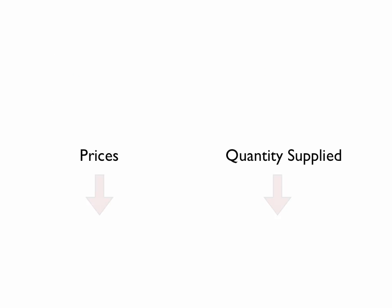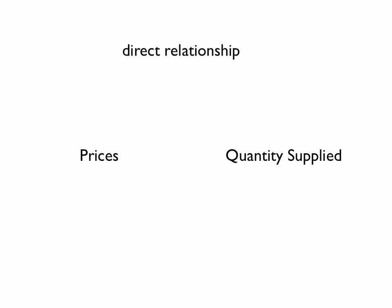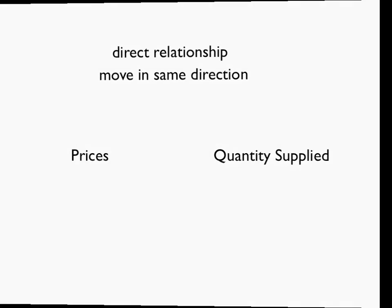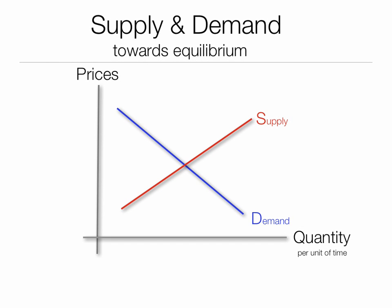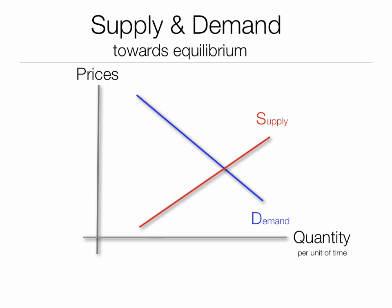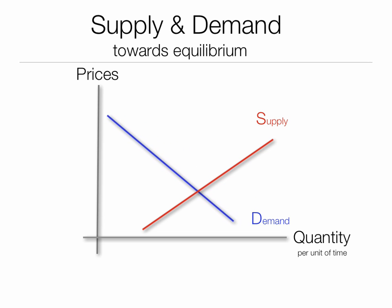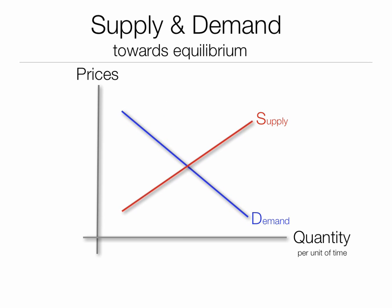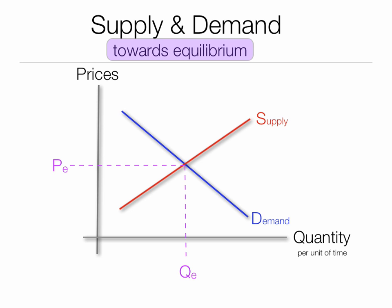At low prices, there's a direct relationship — they move in the same direction: prices and quantity supplied. In economics, we say that things move towards equilibrium. Supply and demand are always shifting back and forth; they never seem to be constant. This is one of the reasons why it's really difficult to apply some of these concepts in practice, because supply and demand are always changing — the market is always fluctuating. But we say it moves towards equilibrium.